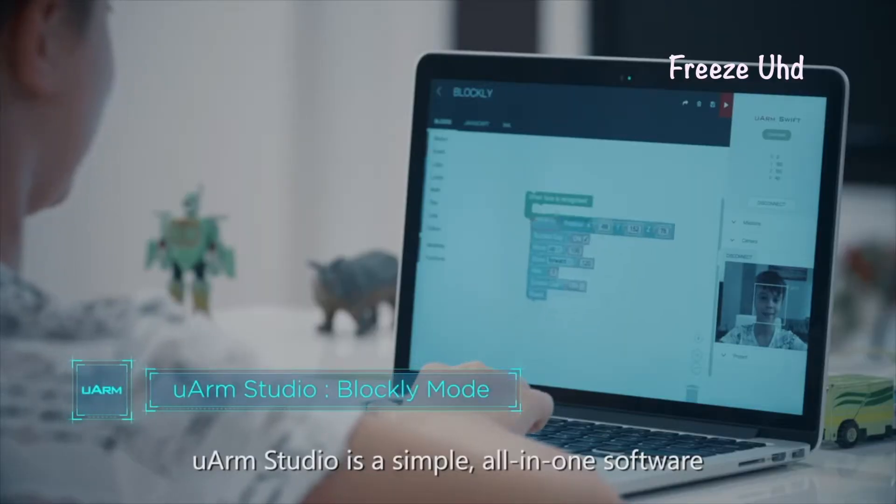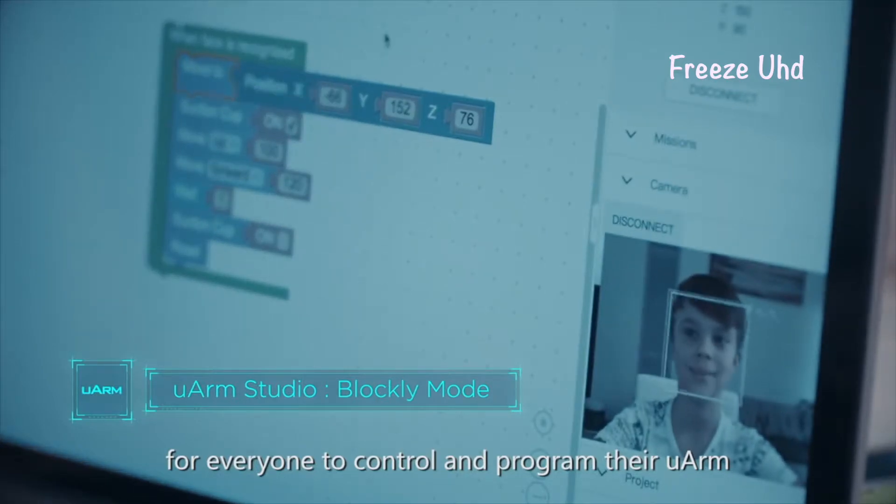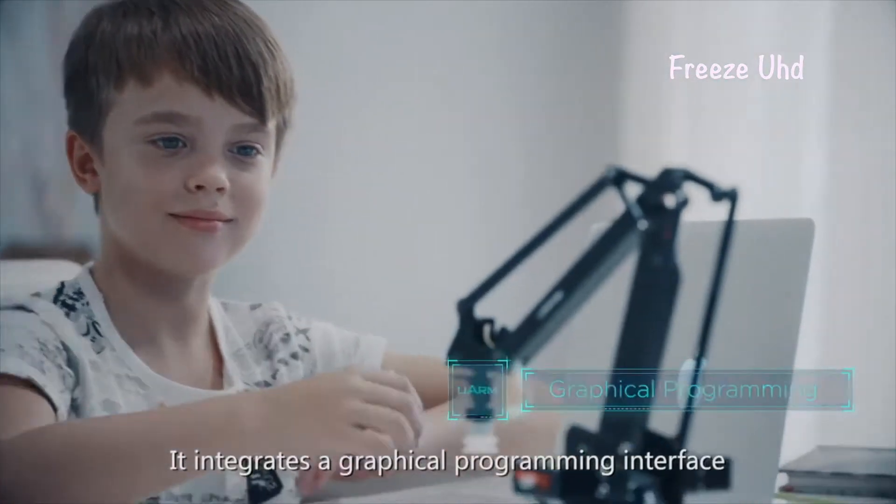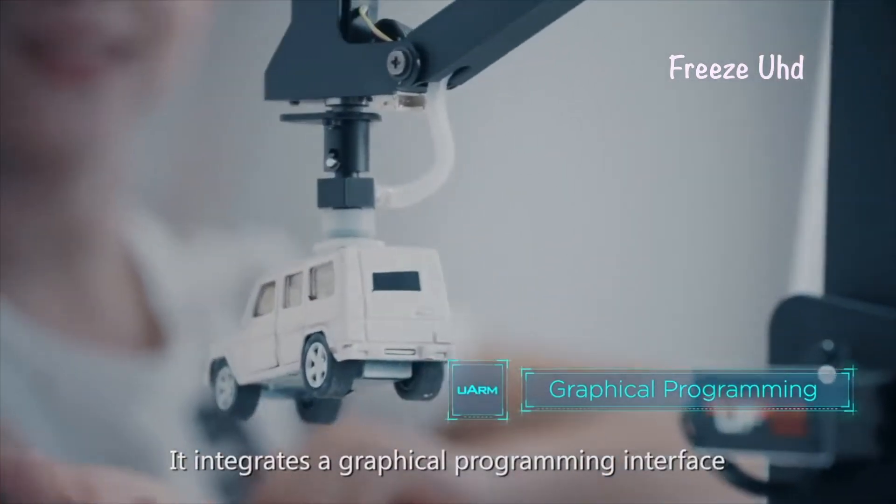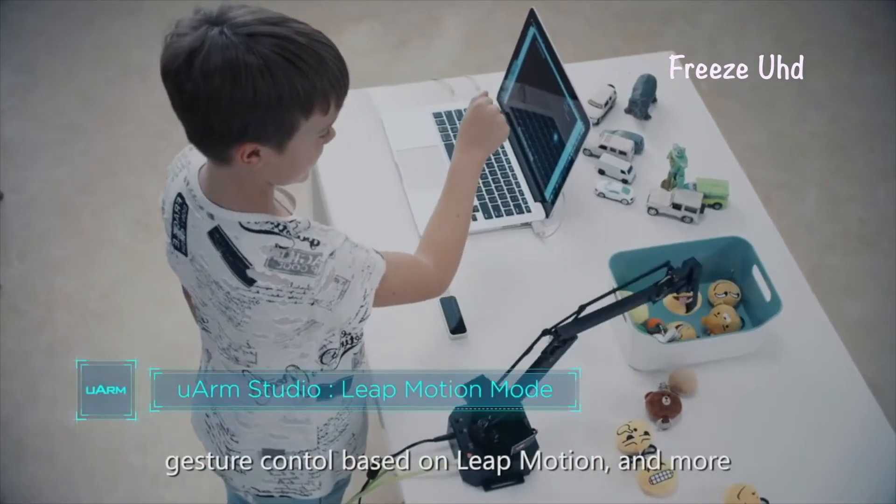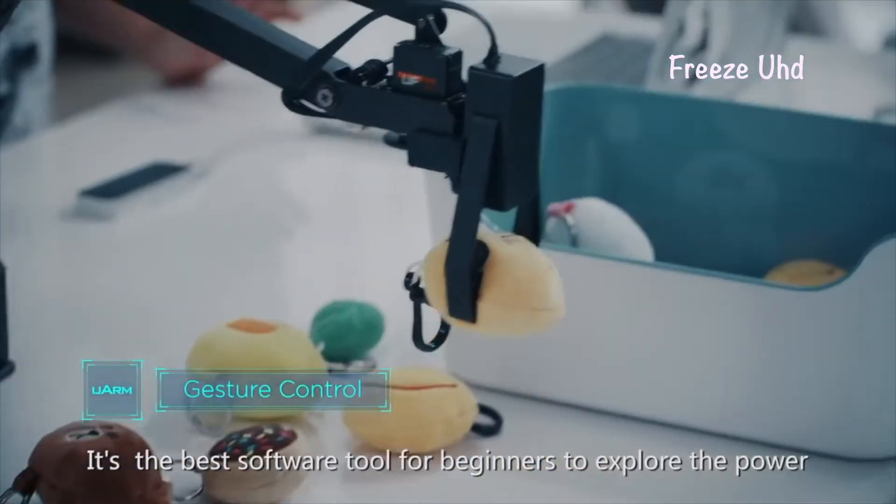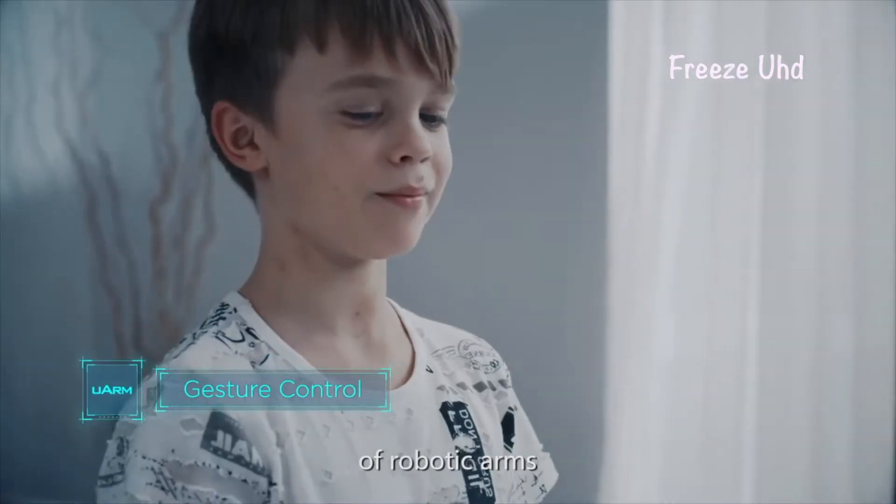U-Arm Studio is a simple all-in-one software for everyone to control and program their U-Arm. It integrates a graphical programming interface based on Blockly, gesture control based on Leap Motion and more. It's the best software tool for beginners to explore the power of robotic arms.